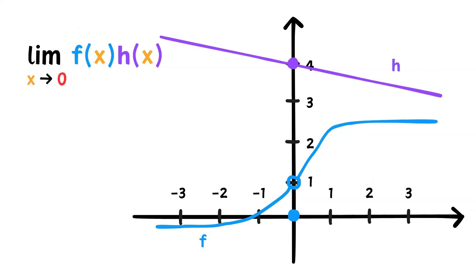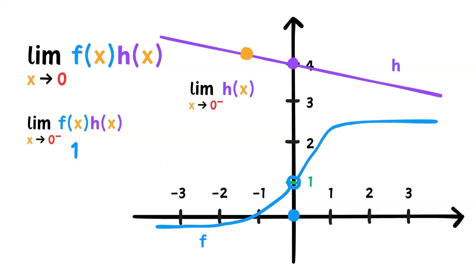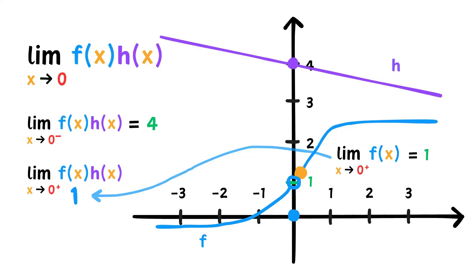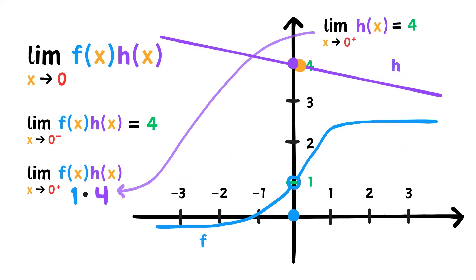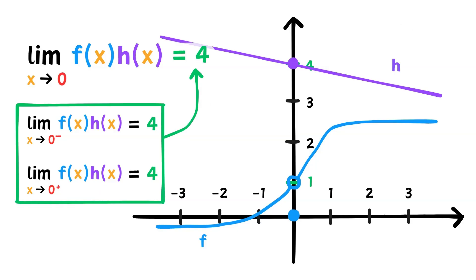Now, let's find the limits of the product of functions. First, let's find the limit from the left. To find the limit of a product of functions, we can just find the limits separately and then multiply at the end. So the limit of f of x as x approaches 0 from the left is 1. The limit of h of x as x approaches 0 from the left is 4. The product of 1 and 4 is 4. So the limit of f of x times h of x from the left is 4. From the right, the limit of f of x as x approaches 0 is 1, and the limit of h of x from the right is 4. The product is 4 again. Since the one-sided limits match, the limit of f of x times h of x as x approaches 0 is 4.